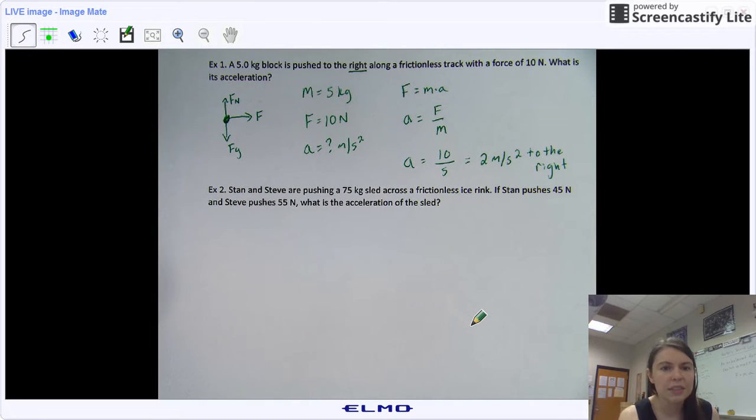So you'll notice that example one and example two are very similar to each other. The only difference is that in example two, Stan and Steve are pushing together. So we have two forces acting on the same sled.